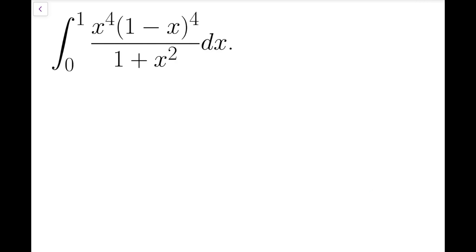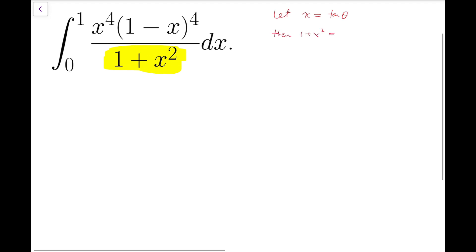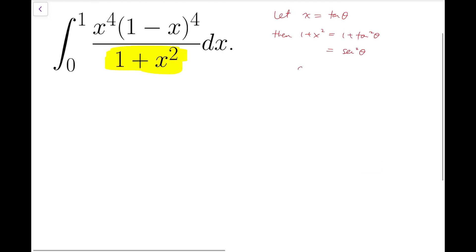The first thing that came to my mind when solving this integral is to use a trigonometric substitution, because the denominator is of the form 1 plus x squared. If I let x equal tangent theta, then 1 plus x squared equals 1 plus tangent squared theta, which is secant squared theta. The differential dx equals secant squared theta d theta, so the two secant squared terms will cancel out, leaving only d theta.